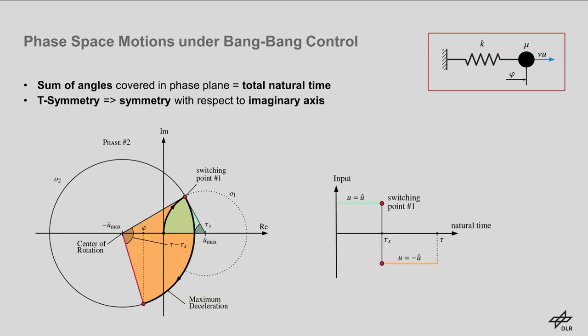By switching the input, the point that encodes the system state transfers to a circular orbit that is centered in the opposite half plane. Further, the sum of all the angles covered in the phase plane is always equal to the total natural time duration of a given trajectory. Last, time symmetry tells us that time-optimal solutions must be symmetric with respect to the imaginary axis.